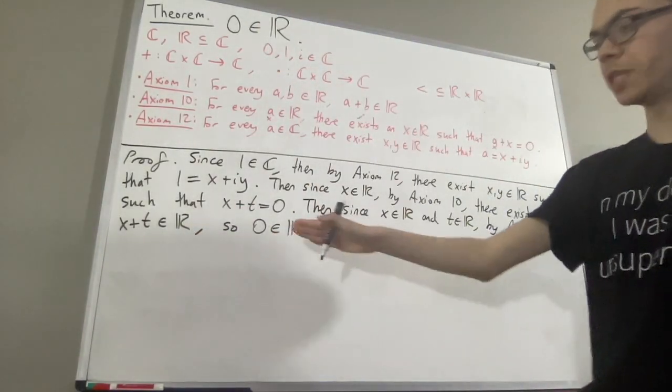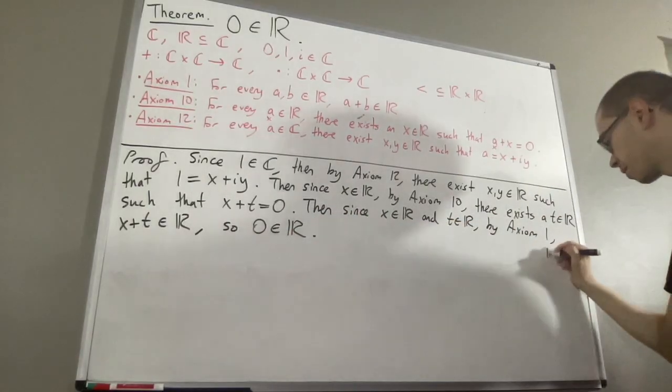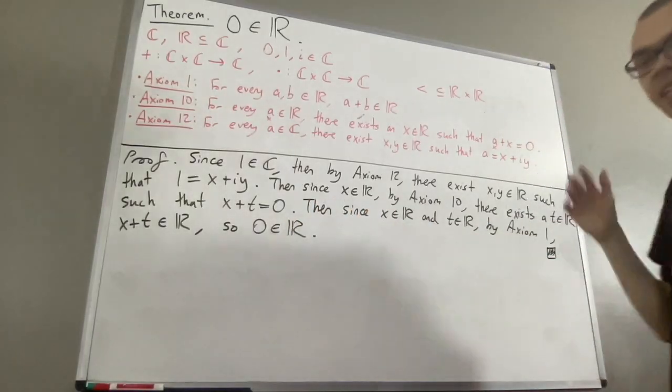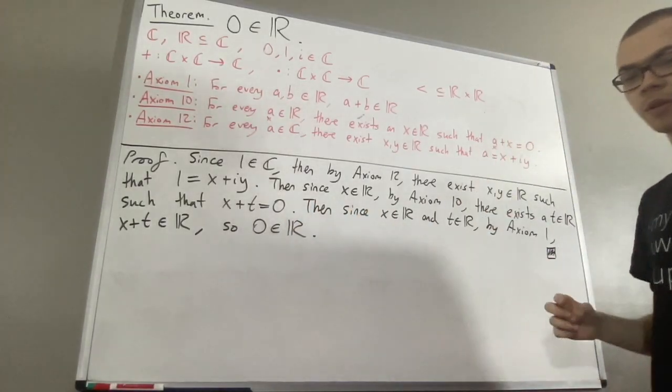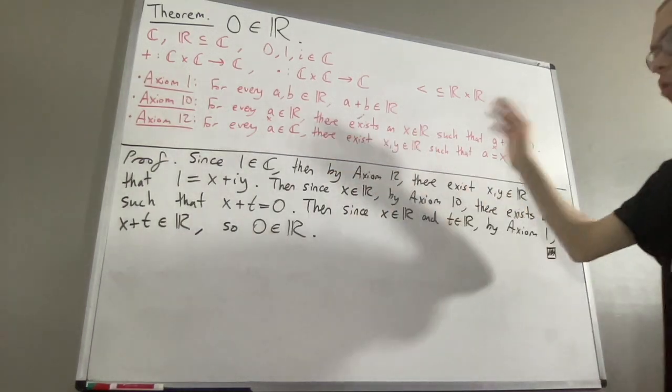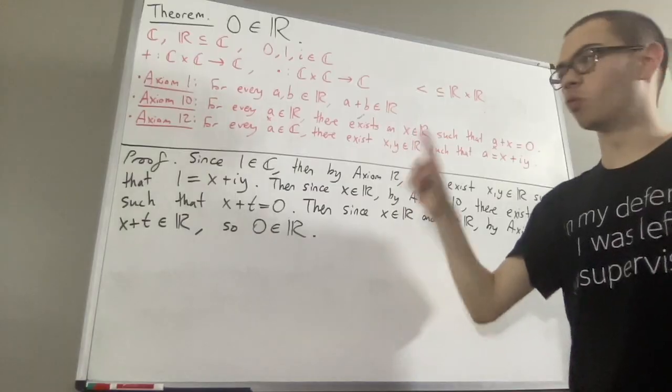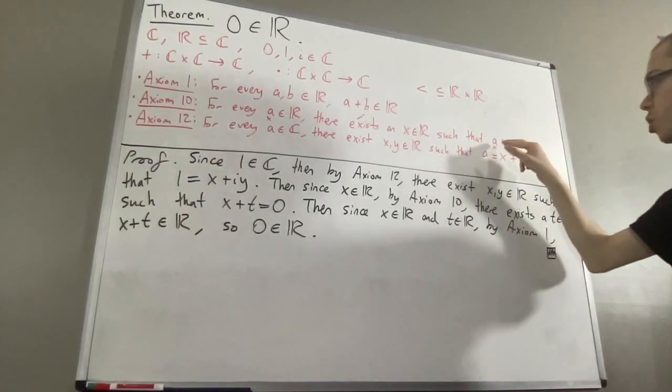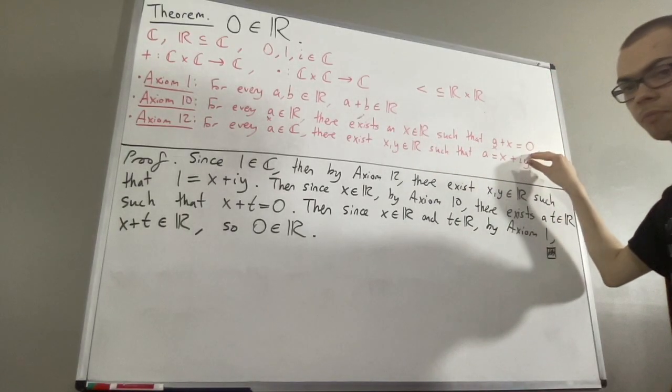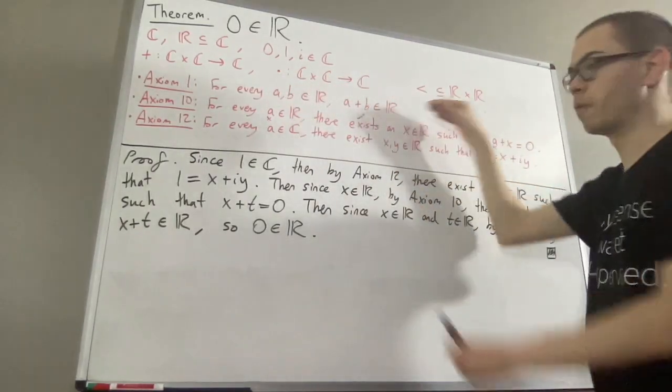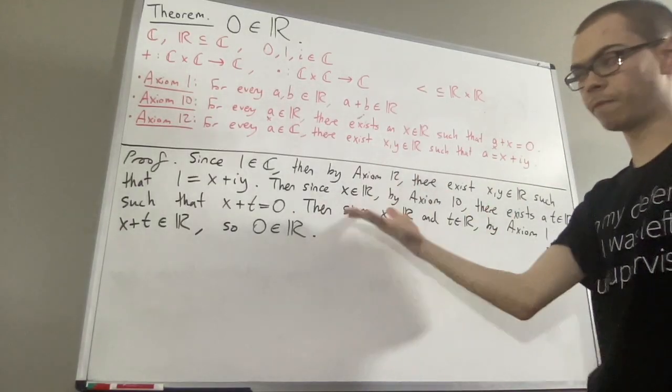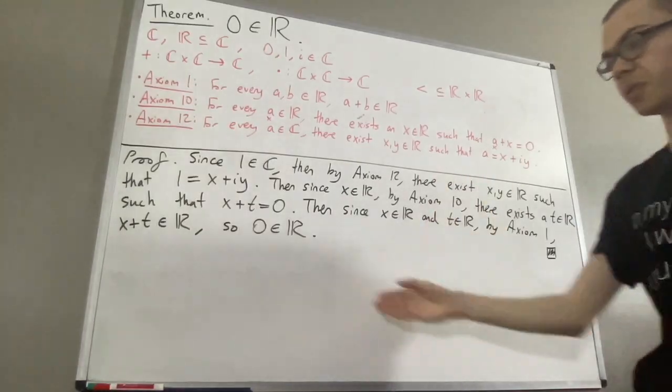And that's it. We have deduced that 0 is a real number. So, this completes the proof. So, taking a step back, it seems that what made this proof work is the existence of at least one real number. Because, once we know at least one real number exists, we can apply axiom 10 to that real number and obtain another real number. Such that, when we add those two real numbers together, we get 0. But, axiom 1 tells us the sum of any two real numbers is a real number, and hence 0 is a real number. So, it just had to do with the fact that we find at least one real number. From there, we could deduce 0 is a real number.